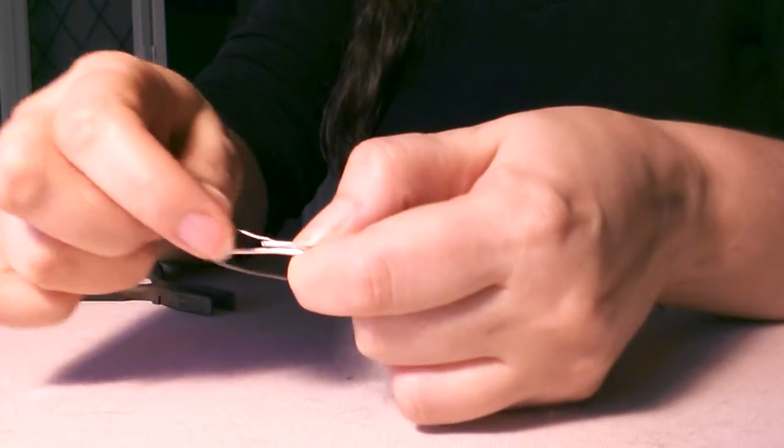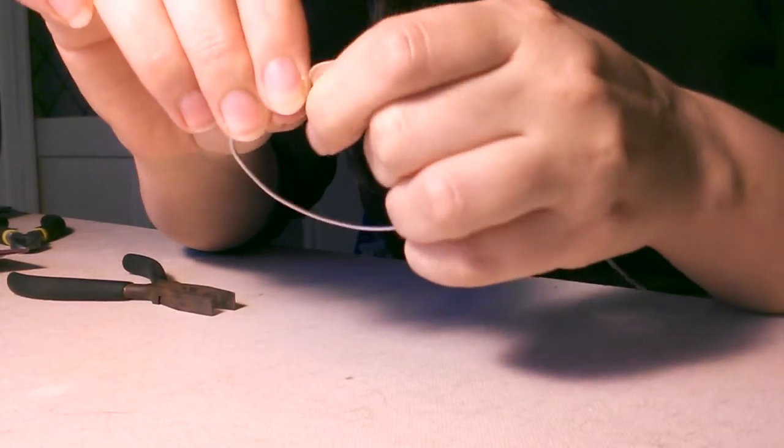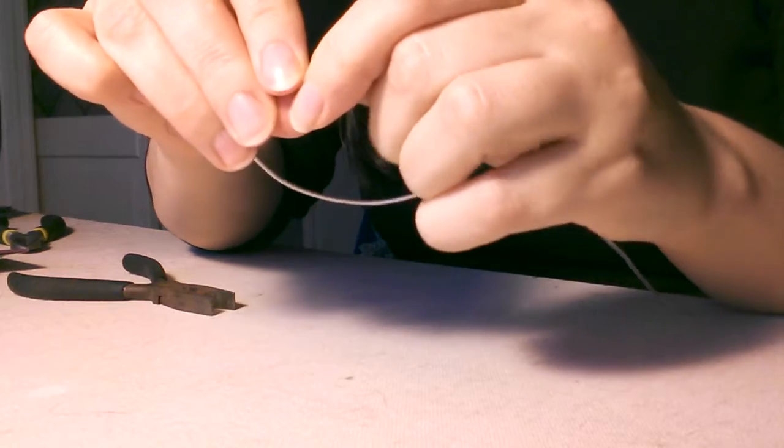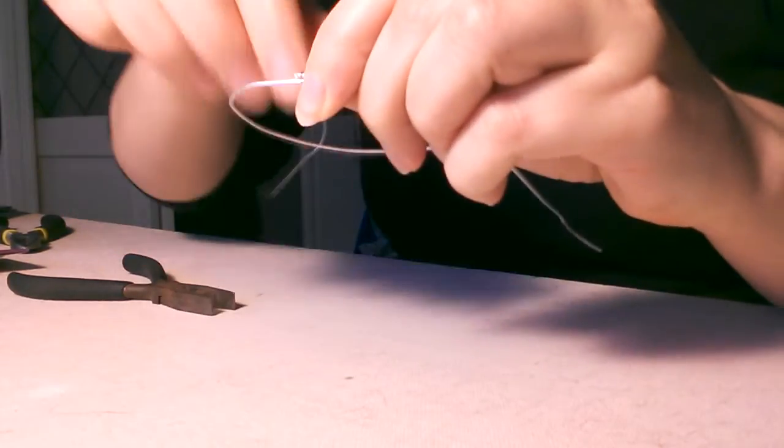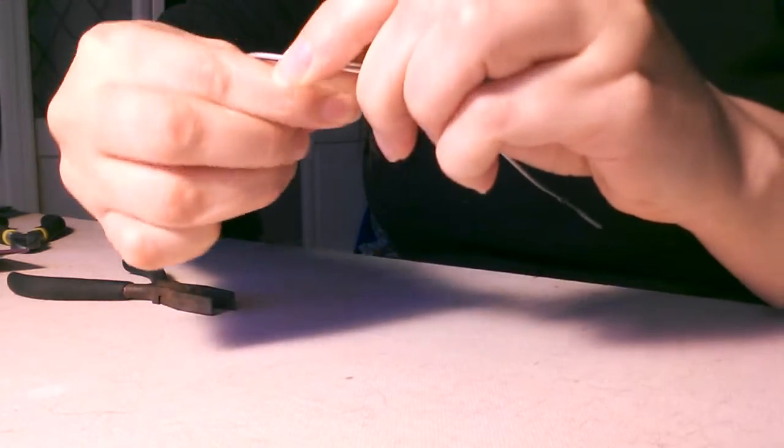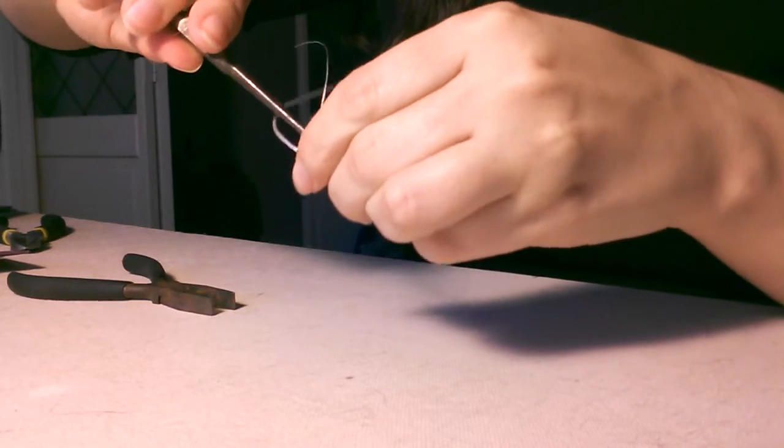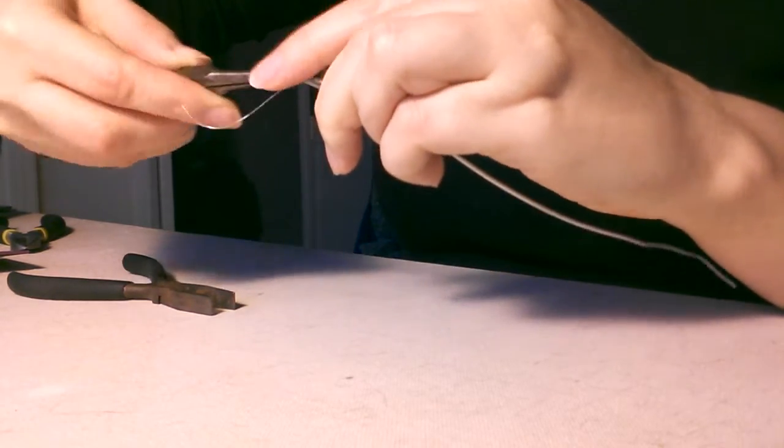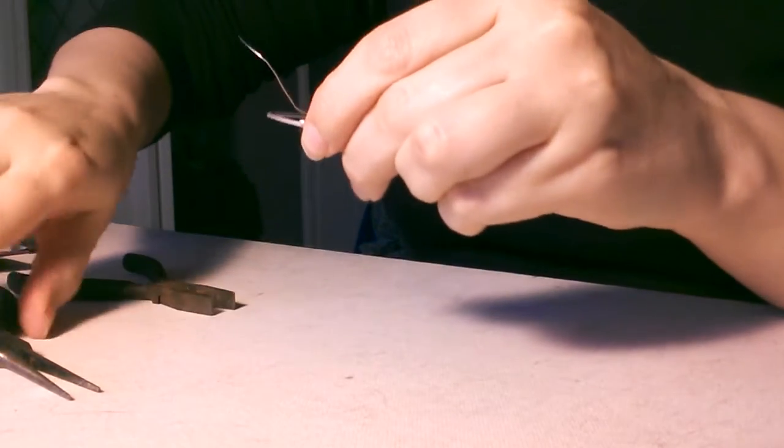So I'm going to take this, overlapping it a little bit so that it ties itself off, and then I'm just going to start wrapping. The tighter you wrap it, the better a joint it will be. You may want to use your pliers to pull it, just to get it nice and tight.